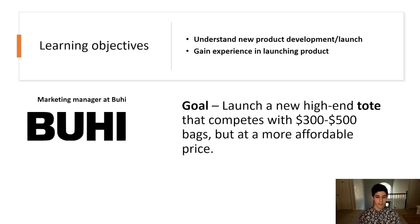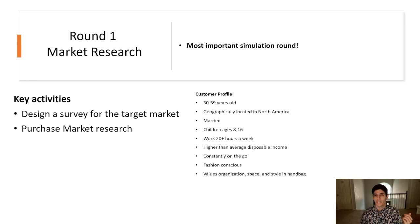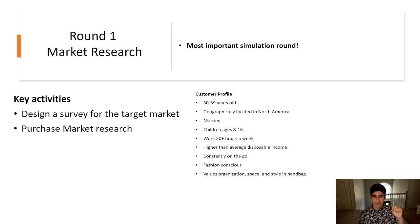Our learning objectives for this simulation are that you gain experience in new product development and launch, asking the right questions, and using market research throughout a new product launch. The first round of the simulation is focused on market research — it's where you'll gather the information necessary to make effective decisions in the next six rounds. The grading on round one is a simple completion grade; however, the next six rounds will rely heavily on this information, so it's really important to get it right.